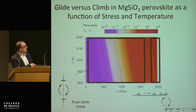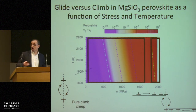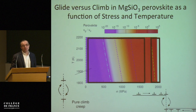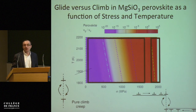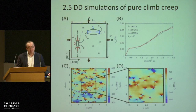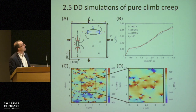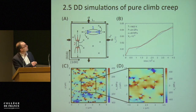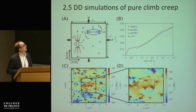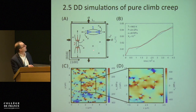The question becomes: can pure climb — the only process available — produce deformation of bridgemanite? We go back to the mesoscale simulation, now putting two types of dislocations for bridgemanite — corresponding to Burgers vectors [100] and [010] in the bridgemanite Pbnm structure.